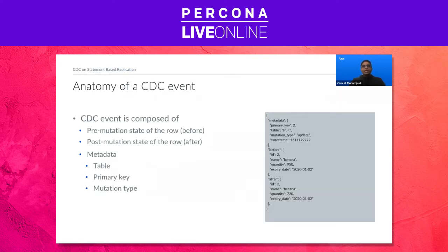Generally, a CDC event captures all the information regarding a change to a row. It captures the snapshot of the row before and after the mutation was applied, along with some metadata. Metadata includes the name of the table and the primary key of the row that was mutated in the mutation operation that resulted in this event. The mutation operation can be insert, update, or delete.